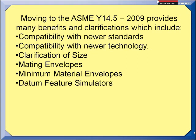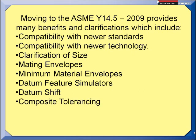The standard now shows more features that can be used as datum features and explains the degrees of freedom that are constrained when they are used as datum features. Datum shift, which is an area that a lot of people have confusion about, has been expanded and clarified. Composite tolerancing has been expanded to include more than two segments in a position or profile composite tolerance. Least material condition applications have been expanded, and the list of benefits just goes on and on.